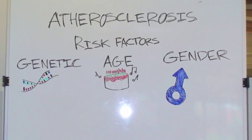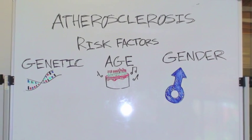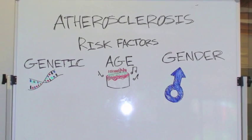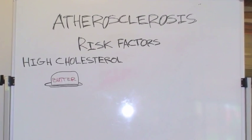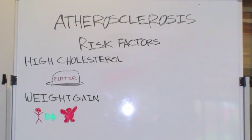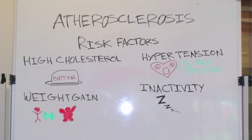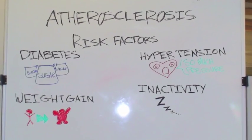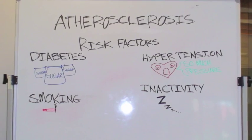The chief controllable factors are due to lifestyle and comprise mainly of hypercholesterolemia, weight gain, hypertension, inactivity, diabetes, and smoking.